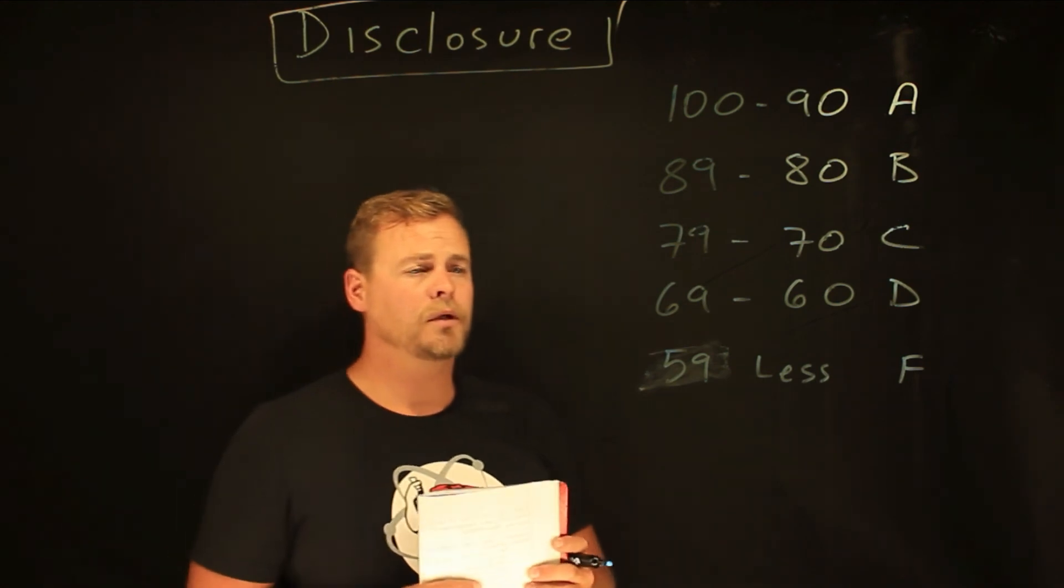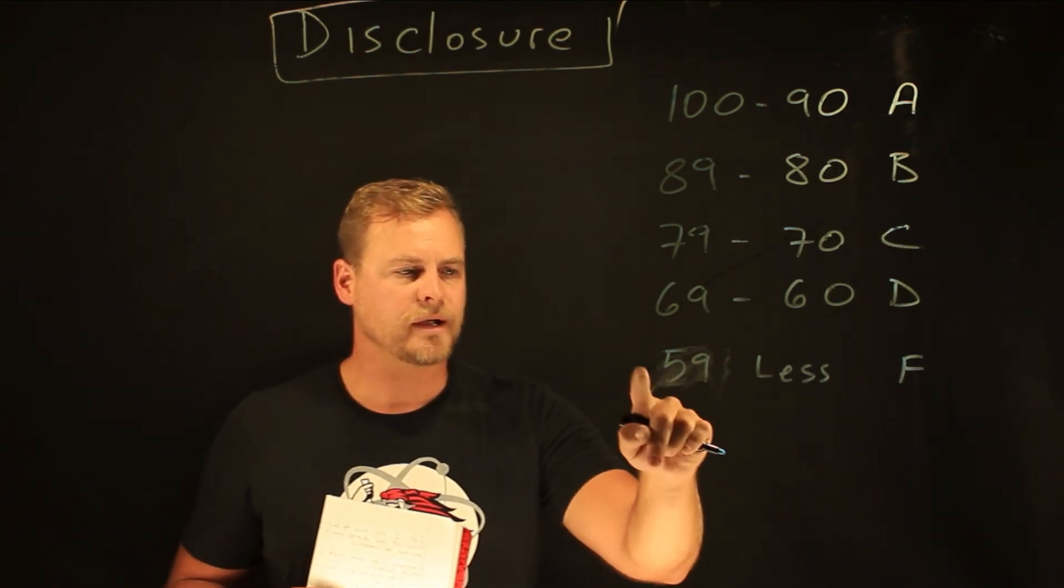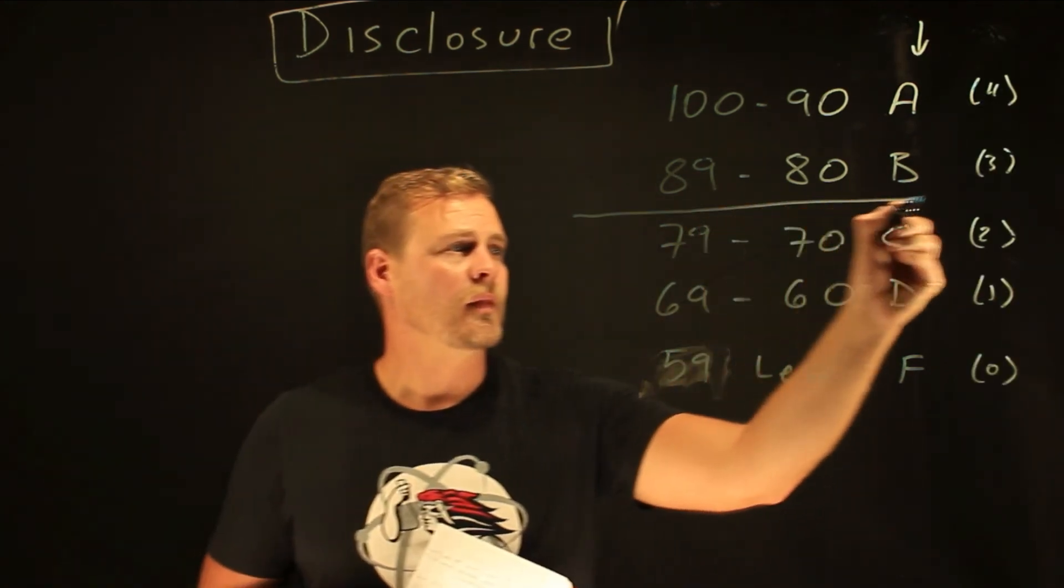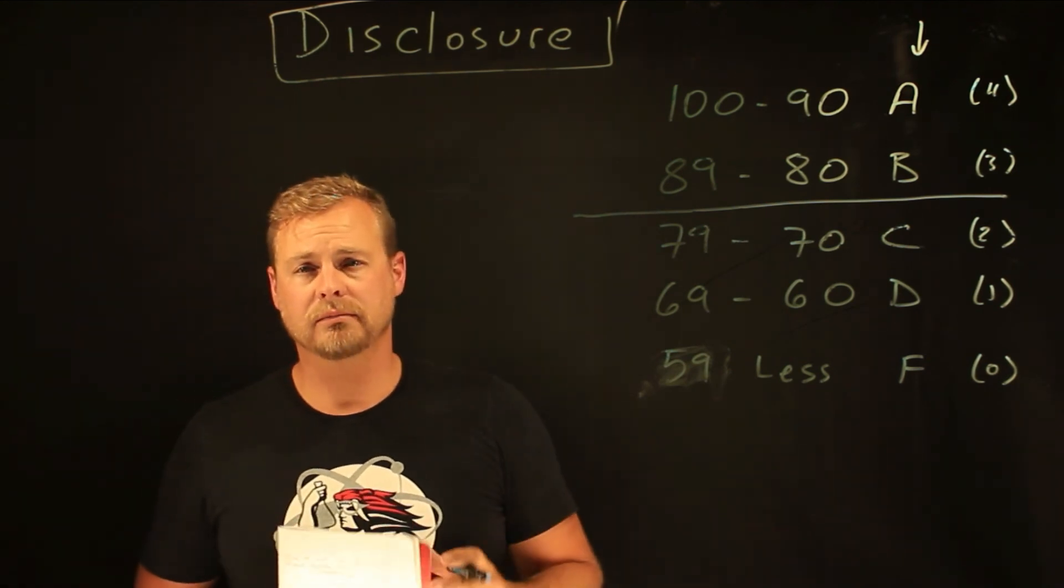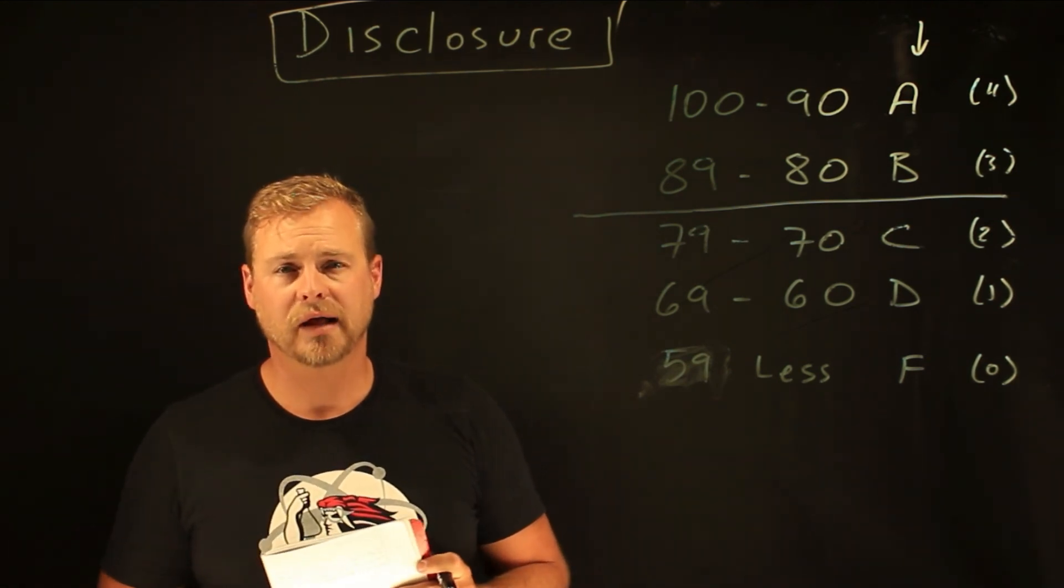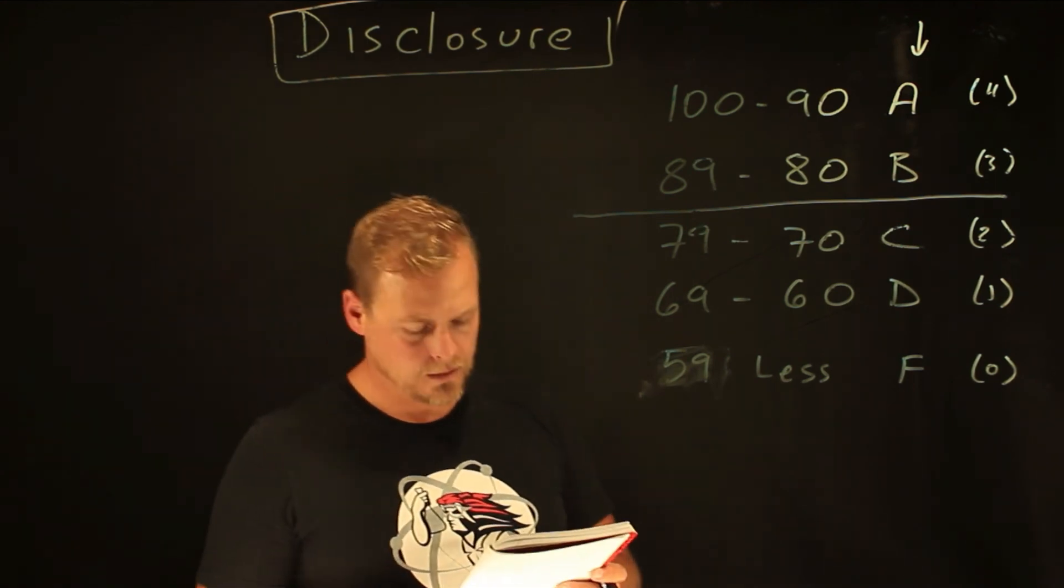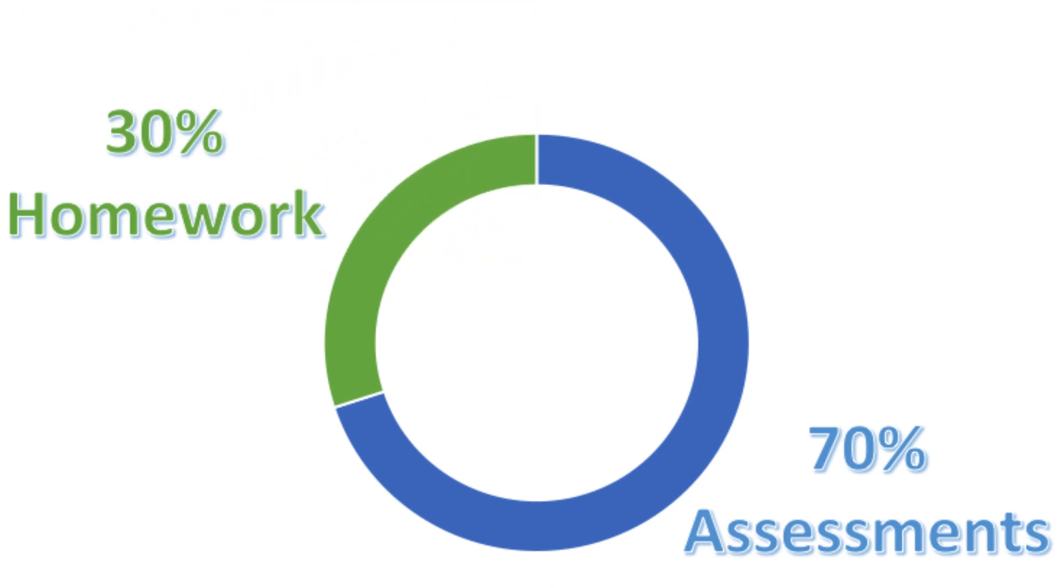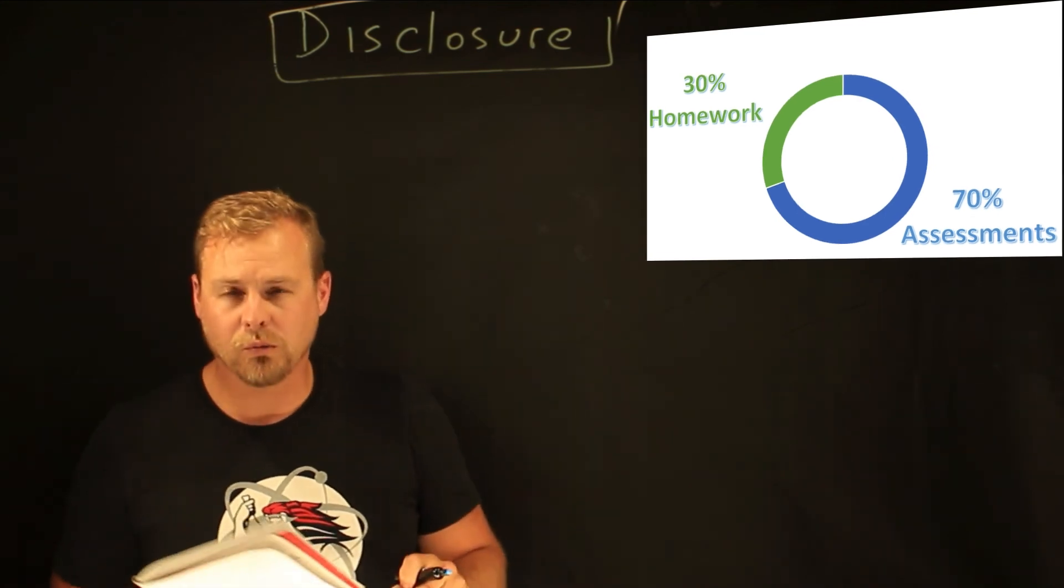It's a fairly non-traditional grading method. I don't do pluses and minuses. And, of course, we'll round. If you get anything above an 80, you know enough to be successful in college. Here's the GPA grading scale. Right here is the grading percentages. It should be 70% assessments and 30% homework.